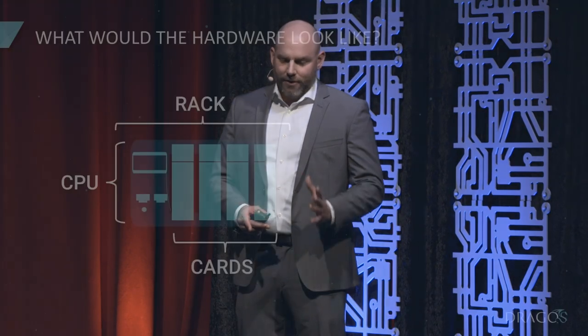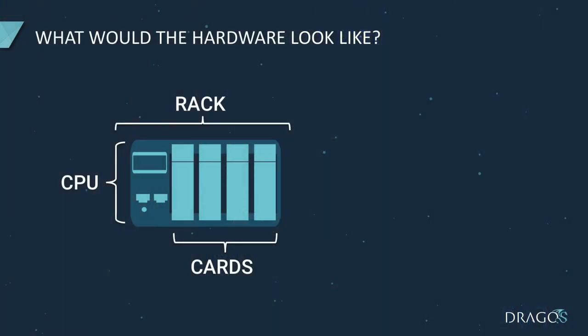So let's take a look at what that would even look like. Today, a typical PLC looks like this: we've got a CPU, a rack, a controller, I/O cards, and then it's usually connected to a network.